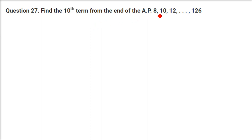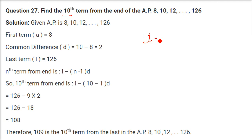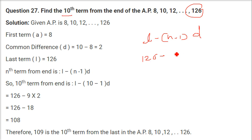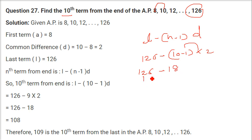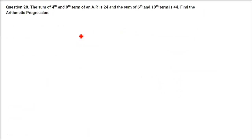Find the 10th term from the end of the AP 8, 10, 12, ..., 126. Using the formula: L − (N−1)×D. L = 126, N = 10, D = 10 − 8 = 2. So: 126 − (10−1)×2 = 126 − 9×2 = 126 − 18 = 108. The 10th term from the end is 108.